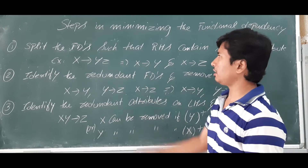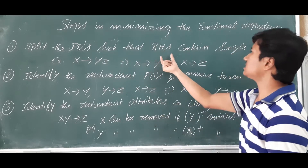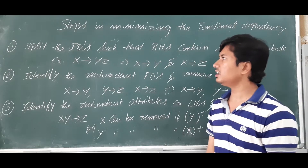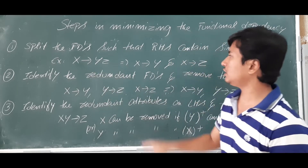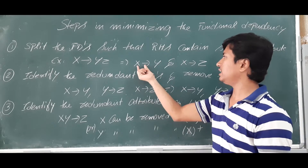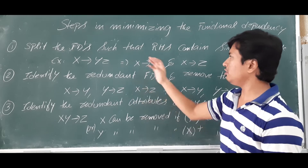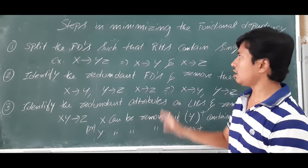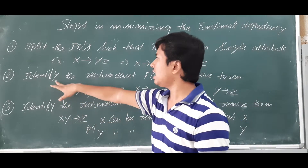Step one is to split the functional dependencies such that the right hand side contains a single attribute. If you have a functional dependency called X determines YZ, then you can split it into two functional dependencies: X determines Y and X determines Z. This will be useful for reducing the functional dependencies.